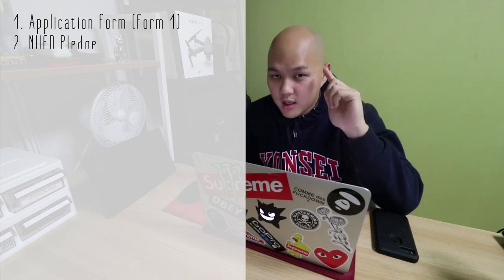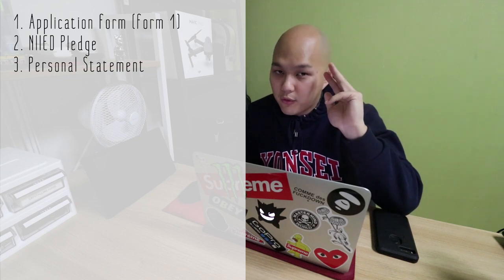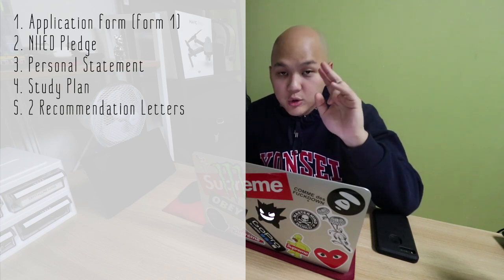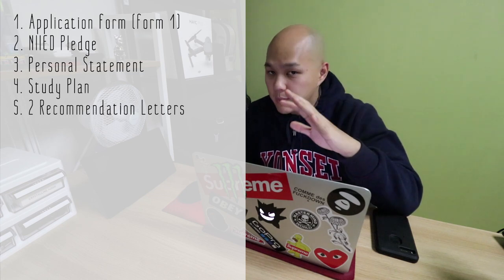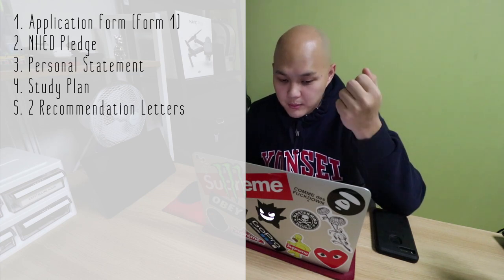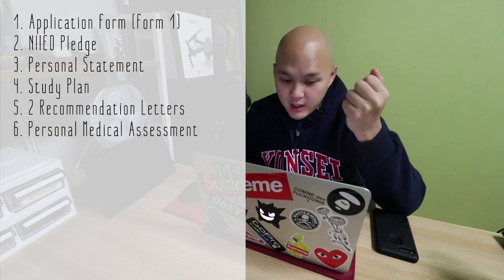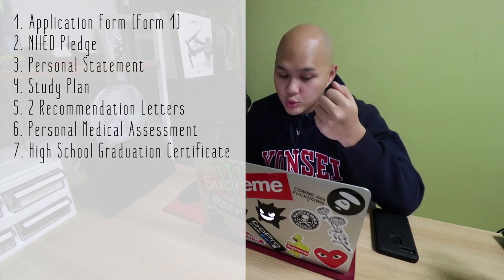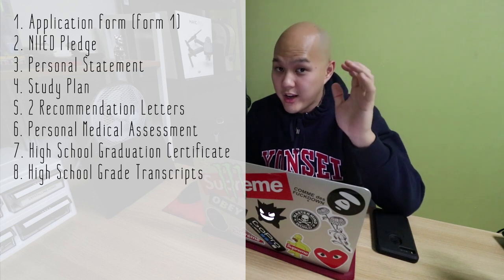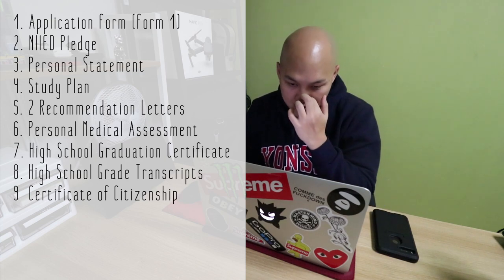First, you need the completed application form, which is form number one. Number two is the NIA pledge. Number three is your personal statement. Number four is your study plan. Number five is two recommendation letters from your high school teacher, principal, or academic advisor. Number six is a personal medical assessment.